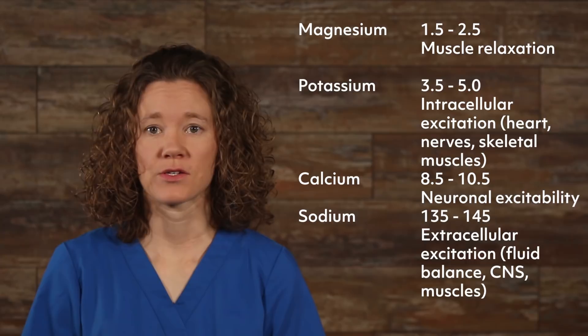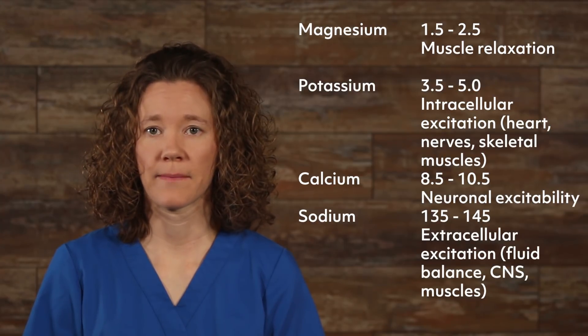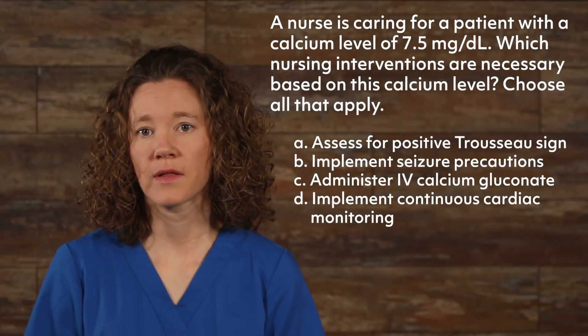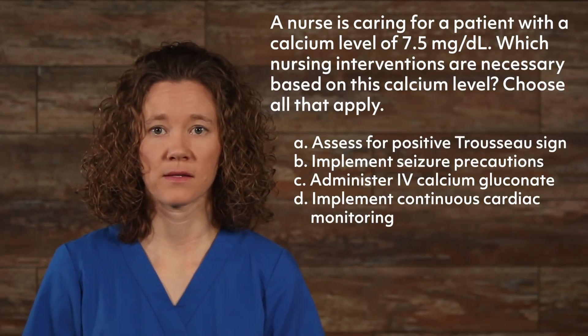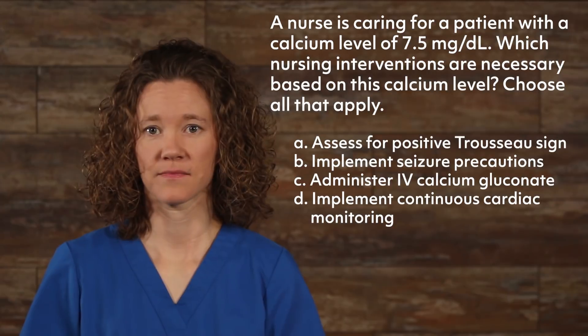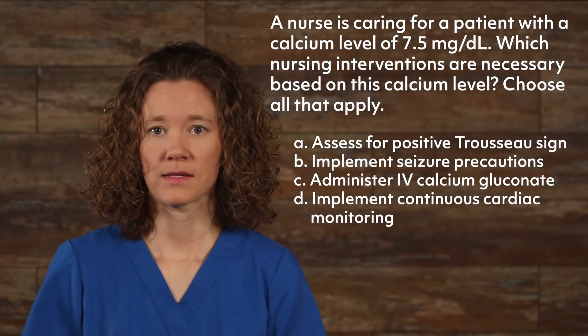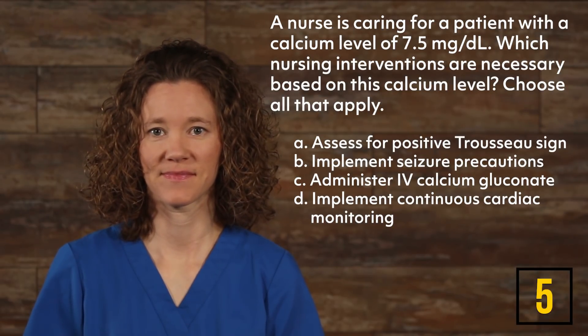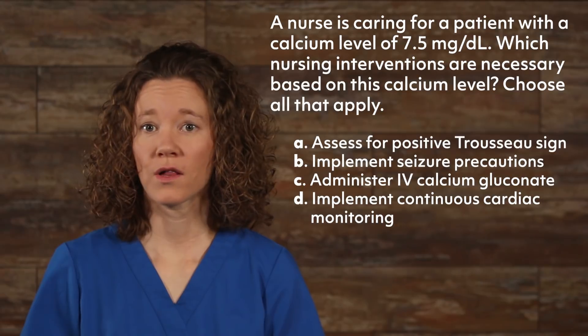Remember, know the normal ranges and the basic function of the primary electrolytes — this will really help you in answering questions related to fluid and electrolyte balance. Let's look at a couple of sample questions. A nurse is caring for a patient with a calcium level of 7.5 mg per deciliter. Which nursing interventions are necessary based on the calcium level? Choose all that apply: A — assess for positive Trousseau's sign; B — implement seizure precautions; C — administer IV calcium gluconate; D — implement continuous cardiac monitoring. If you chose all of the answers, you're correct. All of these interventions are necessary for hypocalcemia.